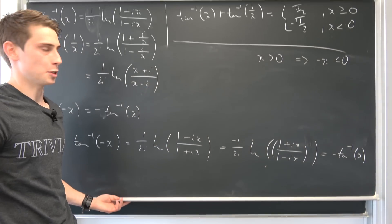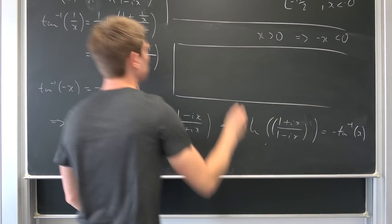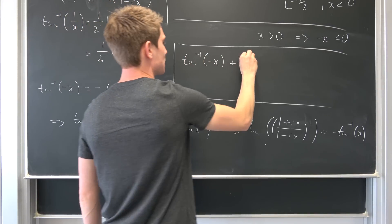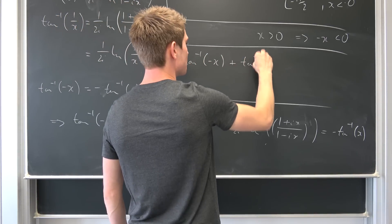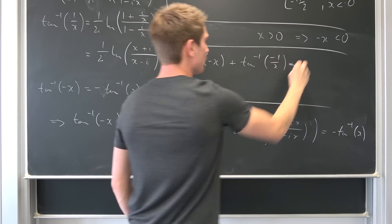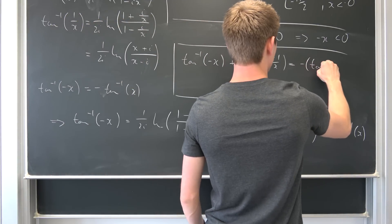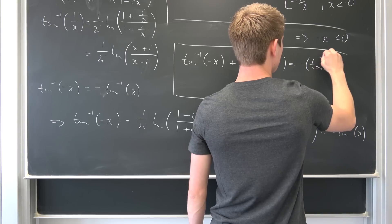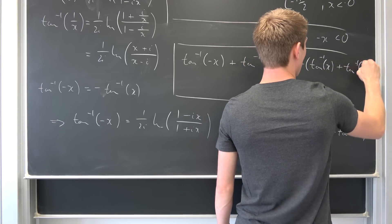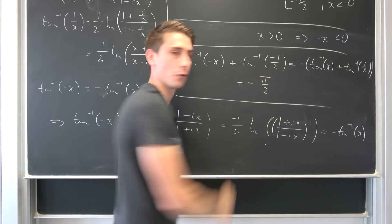And just by the arguments before, we now know that arctan(−x) + arctan(−1/x) = −(arctan(x) + arctan(1/x)) = −π/2.